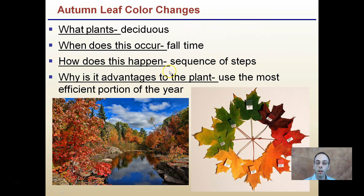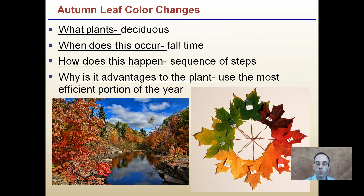How does this happen? There's a precise sequence of steps that plants go through, following a very distinctive pattern. And why is this advantageous to the plant? Why would a plant waste all the energy it put into developing the leaf? It's using the most efficient time of the year, and realizing that in winter there's not a lot going on — it's very cold — so it drops its leaves and goes dormant. This is only possible through a very precise sequence of steps so the plant doesn't end up wasting energy.